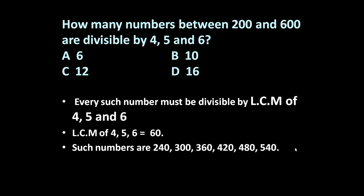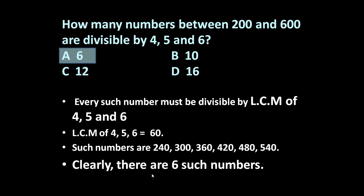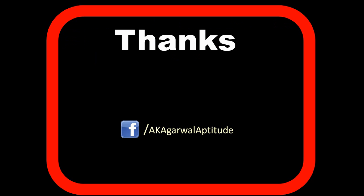And after that 600 is there. So in between 200 and 600, six such numbers are there. So obviously there are six such numbers, so the answer is six. Friends, thank you very much for watching this video. You can also follow me on Facebook.